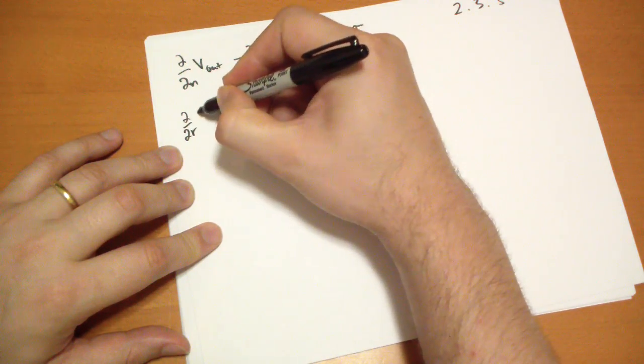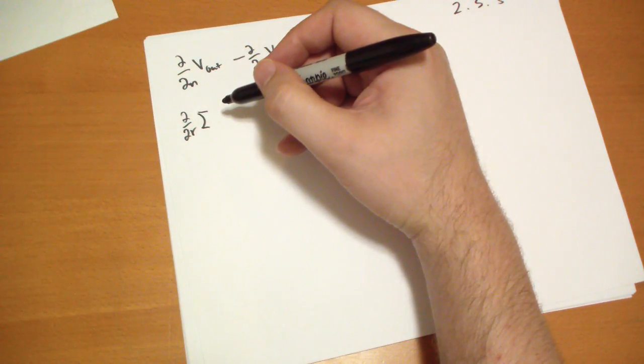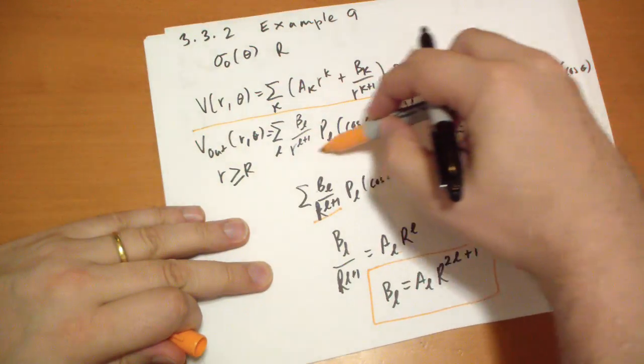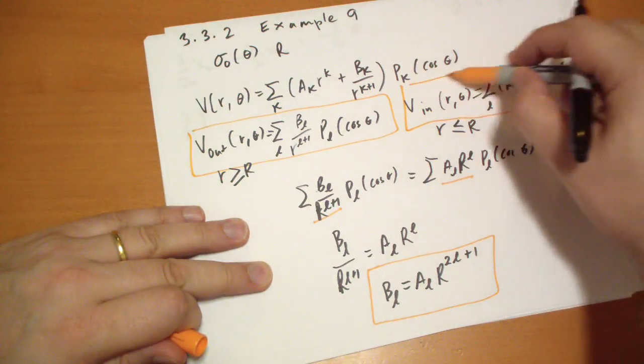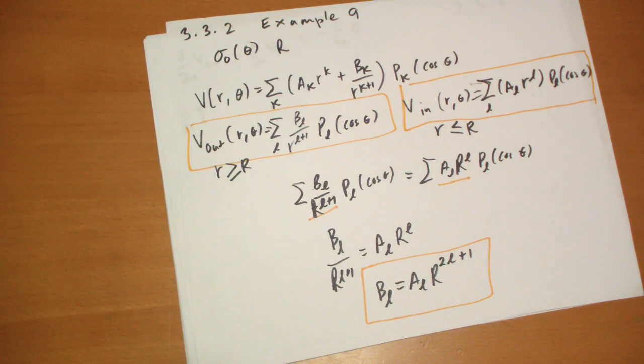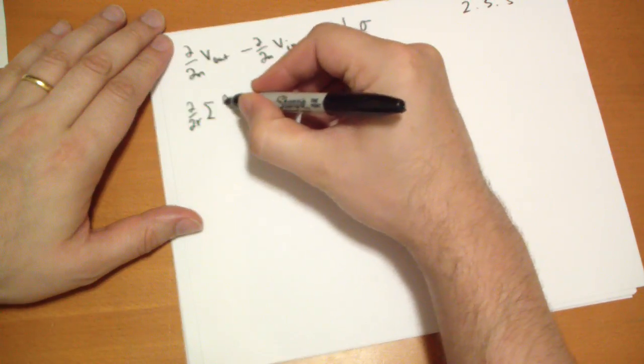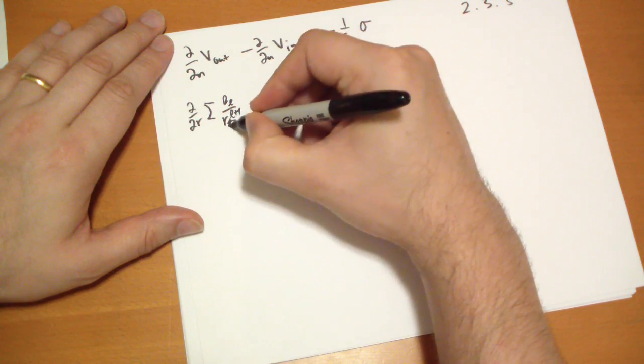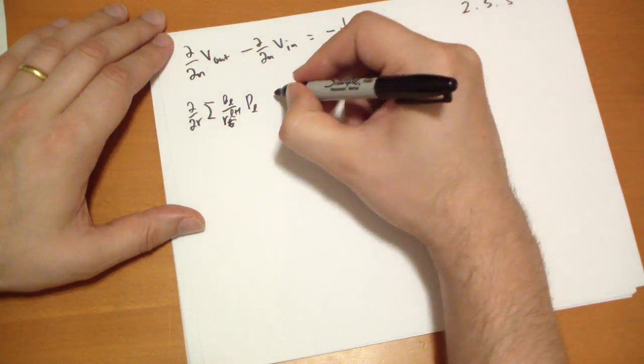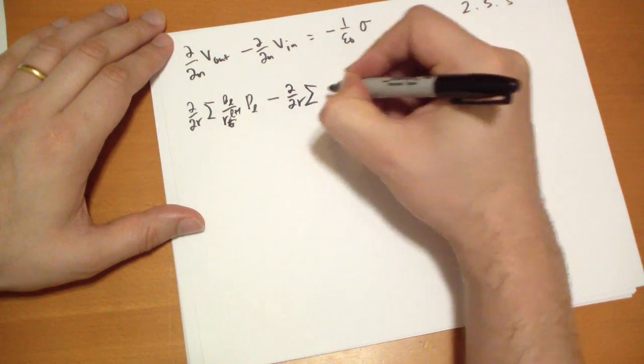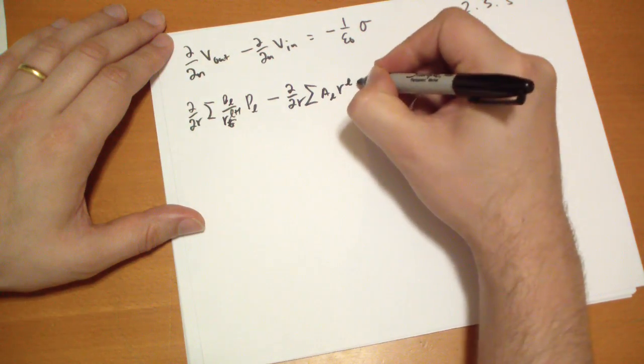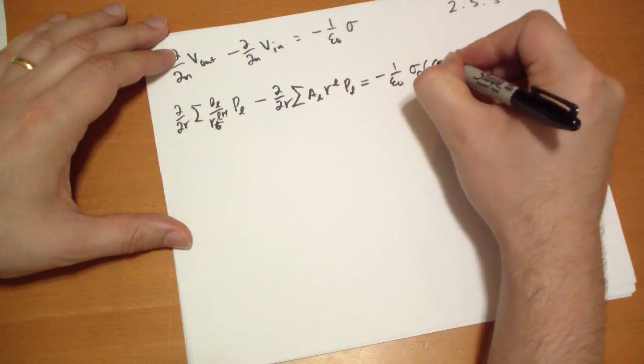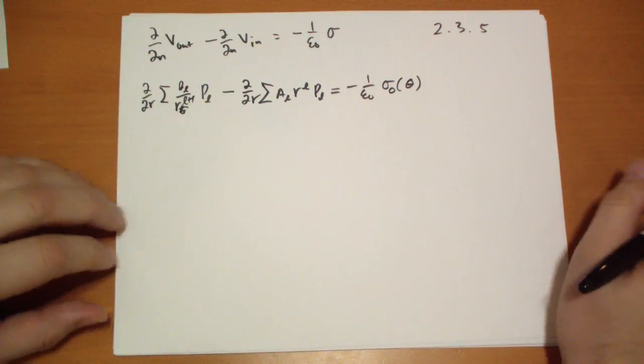So let's plug in our V_out and V_in there. Take note that the normal is R, because we're dealing with the sphere here, centered on the origin. So we get d/dr of the sum, the outside guy. Let's bring this back. These are two important results here. I'm out of paper. So the outside guy is B_L over R^(L+1), P_L.